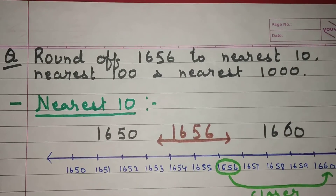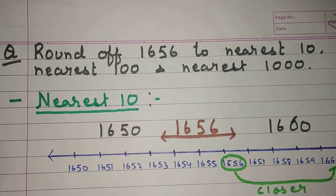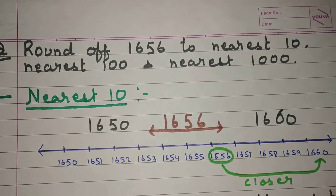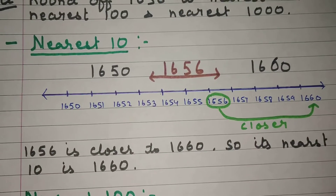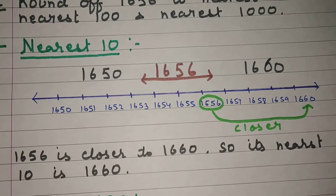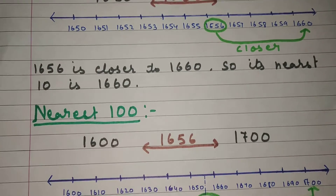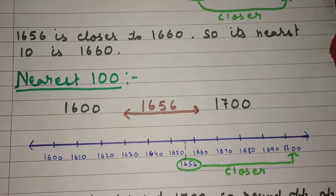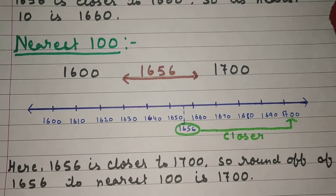Let's solve one question: Round off 1656 to the nearest ten, nearest hundred, and nearest thousand. Nearest ten: 1656 is between 1650 and 1660, and it is closer to 1660, so rounded off to the nearest ten is 1660. Nearest hundred: 1656 lies between 1600 and 1700, and it is closer to 1700.